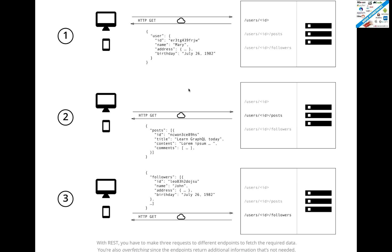The problem is that just to show some basic information — what is the user ID, how many posts are available, and how many followers are available for that user — only that information I want to show on my client, on my mobile phone, on my web application, on my UI. In that case, you are hitting three services, making requests to the server three times, fetching a huge amount of data, then filtering and displaying that particular data on the client. This is the problem with the typical REST API.